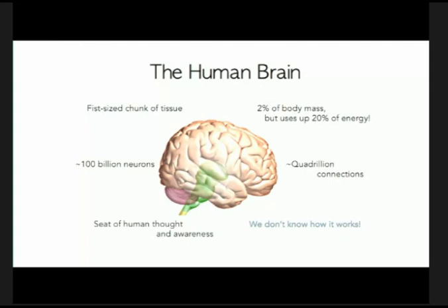Santiago Ramón y Cajal took sections of the brain, stained them, and worked out very intricate circuits — how different neurons connect to each other. Afterwards, Nobel Prize-winning physiologists like Hodgkin and Huxley, Hubel and Wiesel stuck small microelectrodes into the brain and recorded its activity. They were primarily biologists and biophysicists interested in how the brain works as a biological organ.